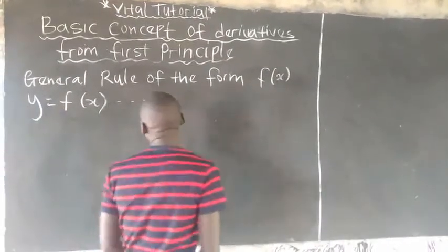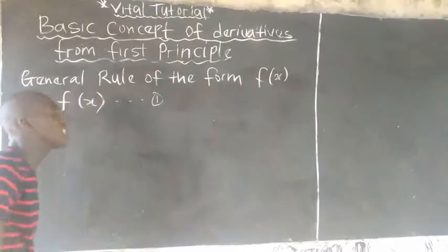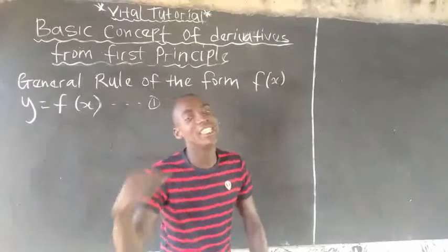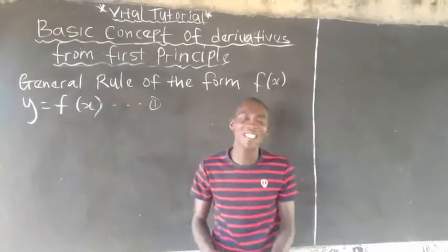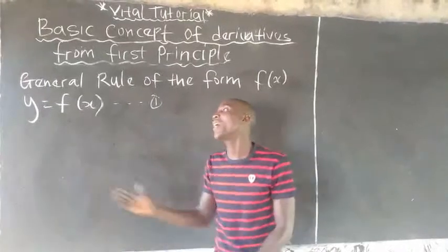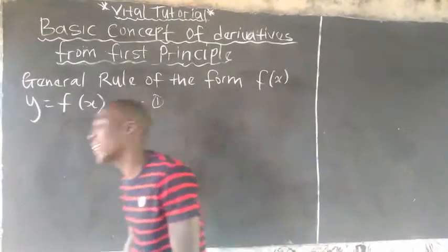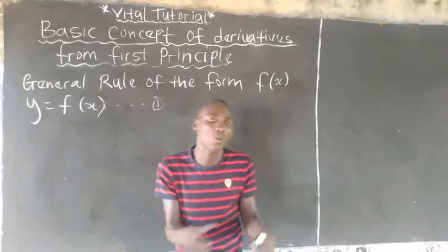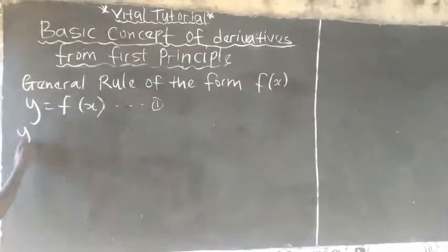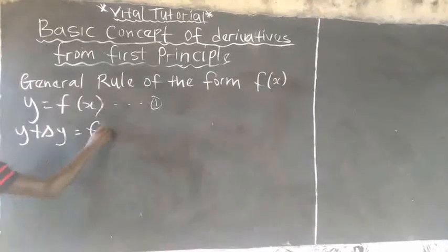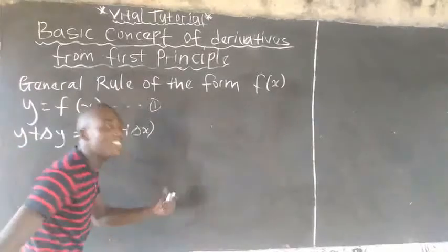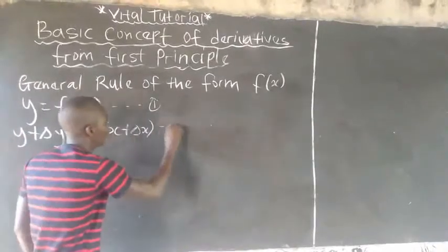The second step here is you add your change in y to y and your change in s to s. That is adding change in s to s and change in y to y. So, it will be y plus change in y equals to f(s plus change in s). And you make this step equation number 2.